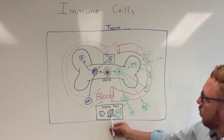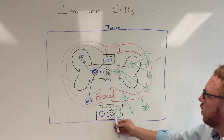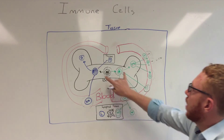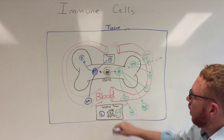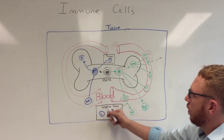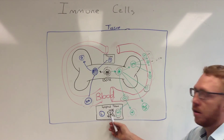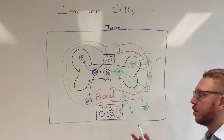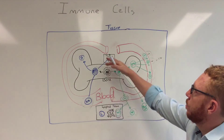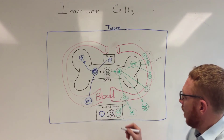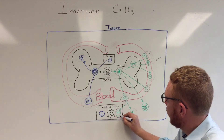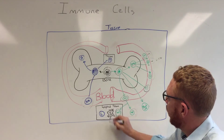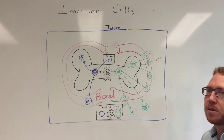One final cell type to be mindful of is the dendritic cell. These cells come from both lineages and their primary job within the lymphoid tissue is to phagocytose foreign material and then antigen-present it, in most cases to T cells. So both macrophages and dendritic cells serve as the antigen presenting cells of the immune system.